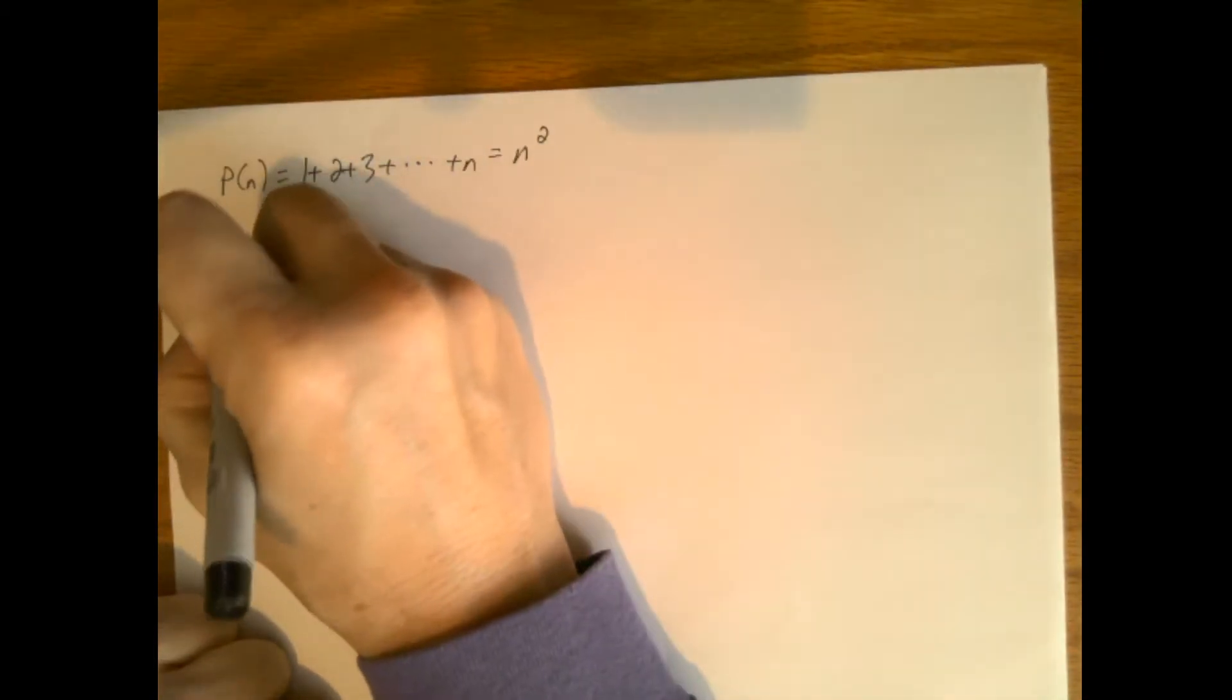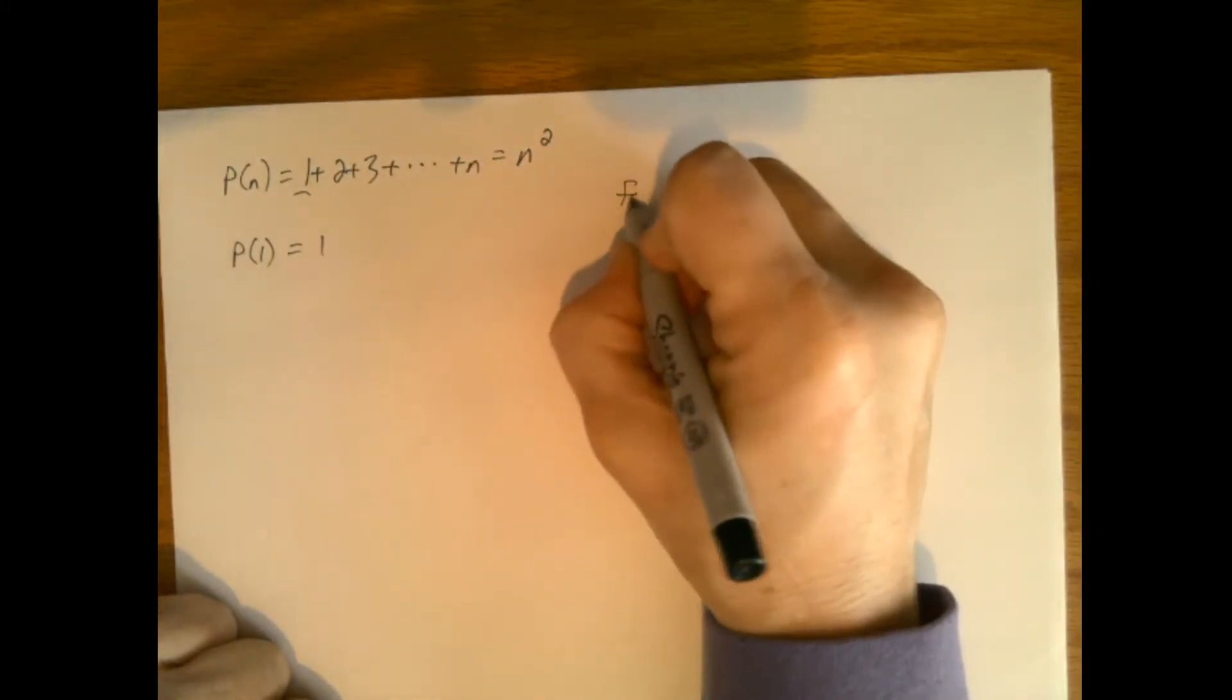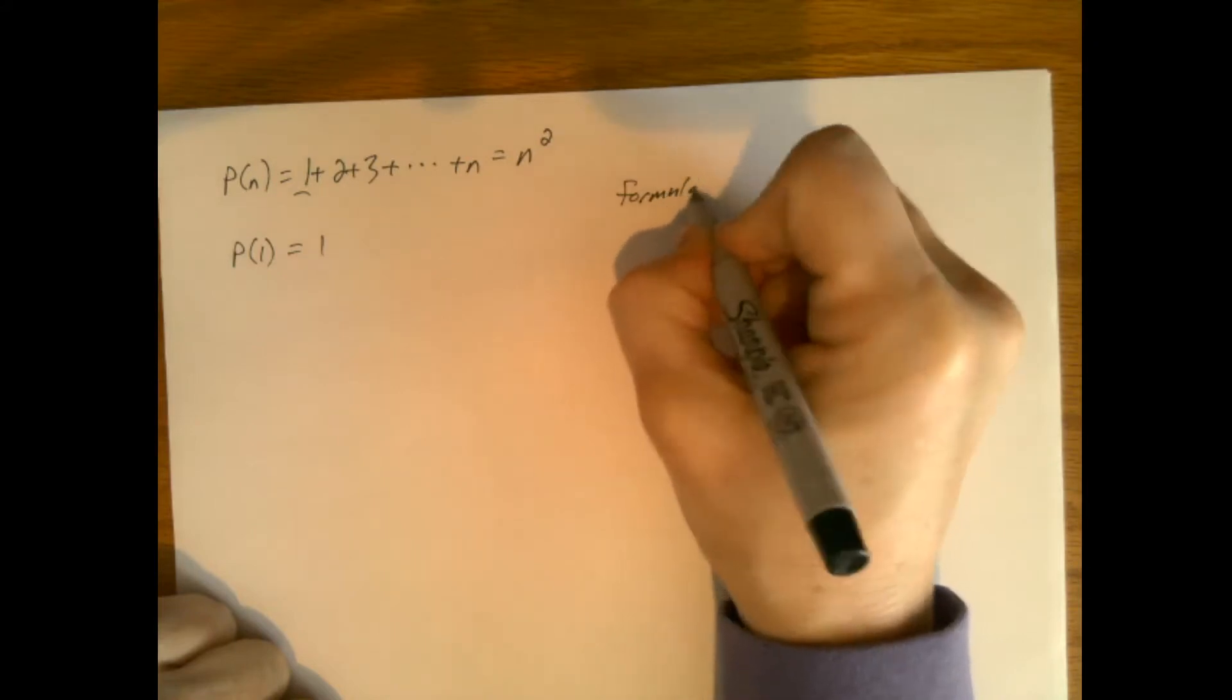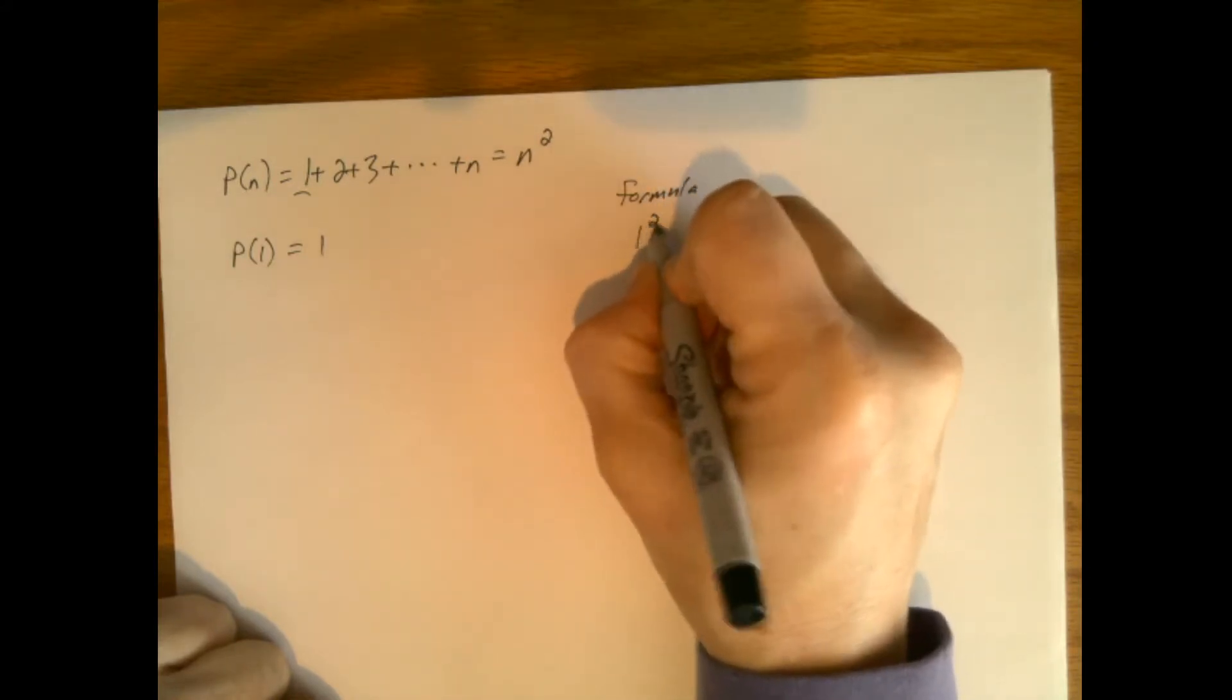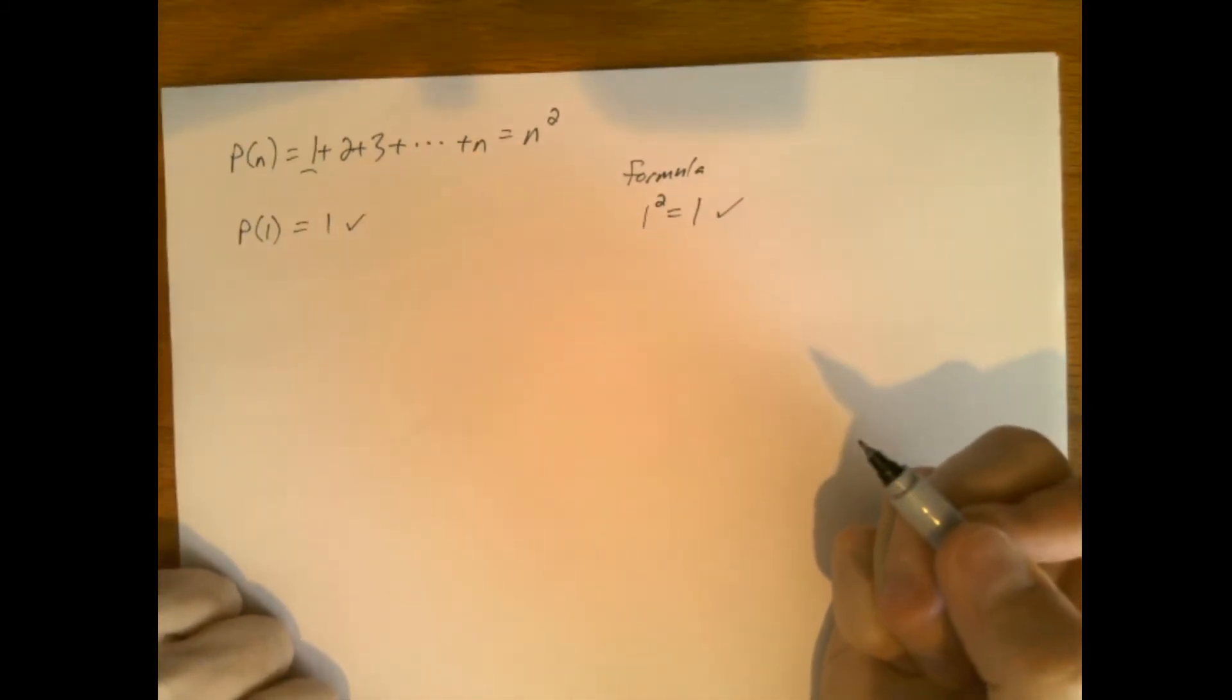So it's P(1). Well P(1) is the first element. If we use the formula then we have 1 squared equals 1. So 1 equals 1. So that part works out.